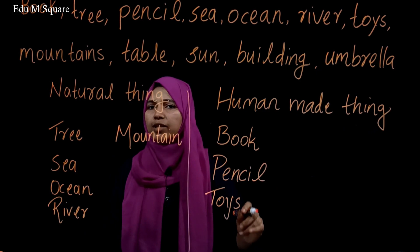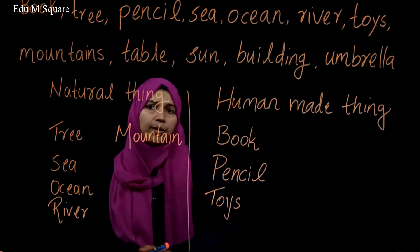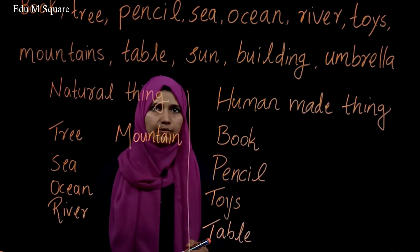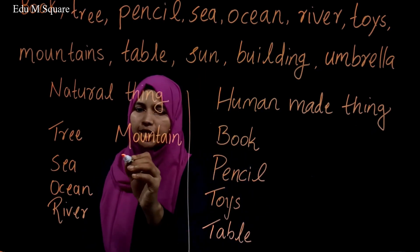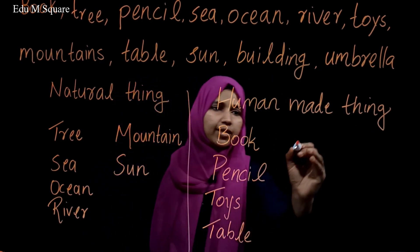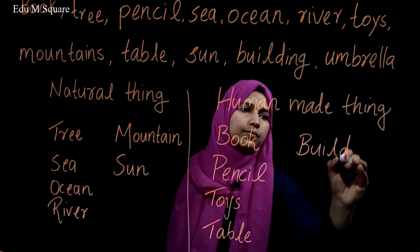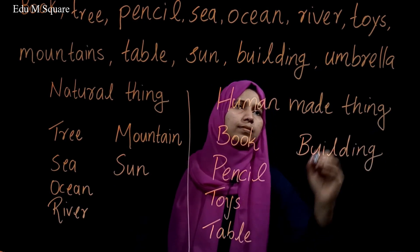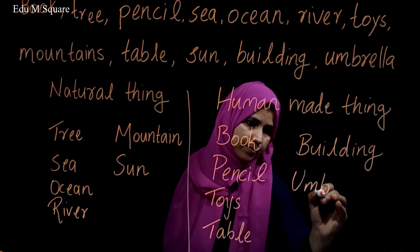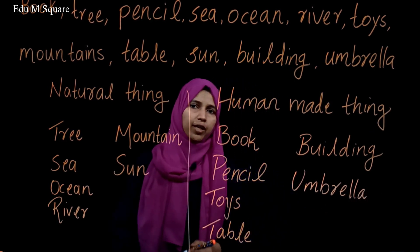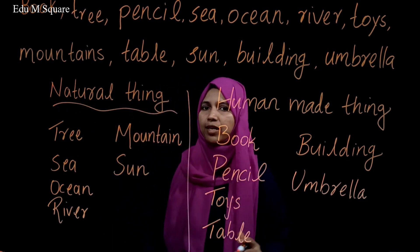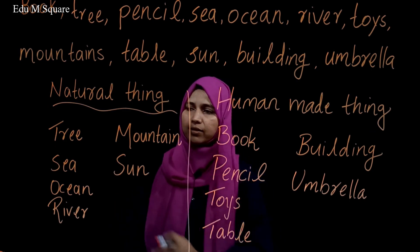Table — tables are made by carpenters, so table is a human-made thing. What about sun? Natural thing — very good. What about building? Yes, that is a human-made thing. Umbrella — human-made thing. So just read the natural things — these are the examples for natural things.